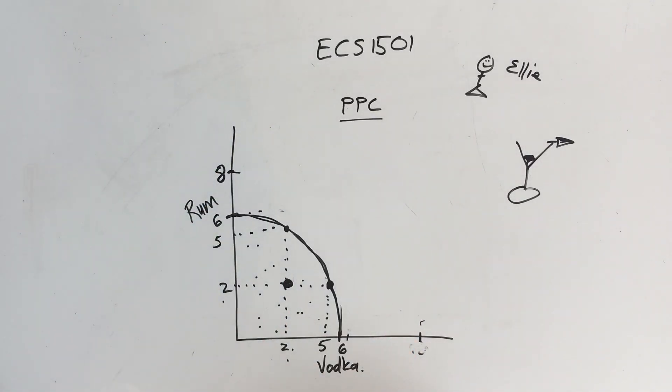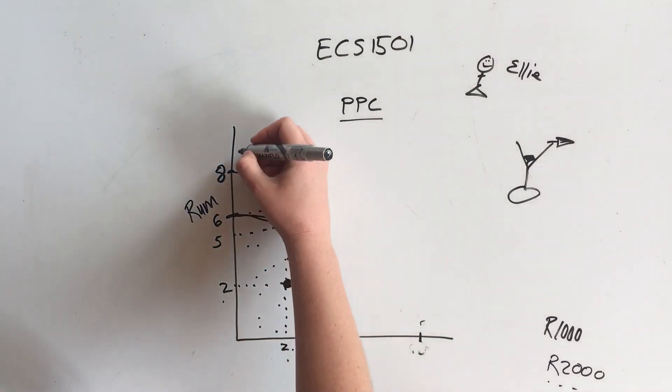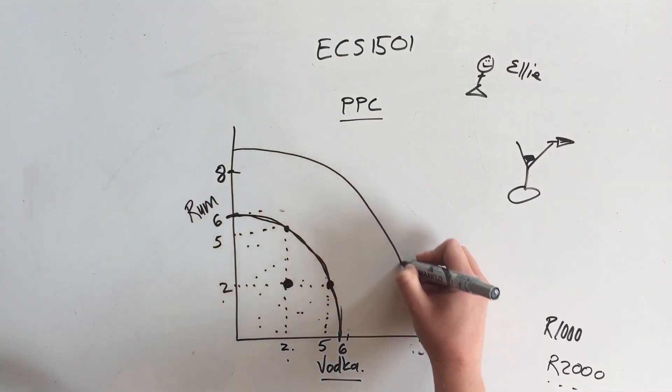Another thing that they like to use in exams is due to technology, technological improvements. Let's say our budget was a thousand rand and with that thousand rand we could buy a maximum of six vodka or six rum. Now what could happen is something external could increase our budget, which in the exam they will call increasing technology. This means that our total possibility curve is going to move out because we have more options and we can use our resources more effectively. So the whole curve can move out to let's say ten and ten.